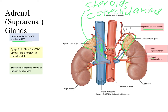Sympathetic fibers from chain ganglia T8 to L1 go to the adrenal medulla. The adrenals are drained by lymphatics to the lumbar lymph nodes — all the lymph nodes grouped in the lumbar region are where the suprarenal glands will drain excess fluid to along lymphatic vessels.